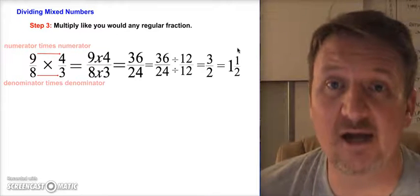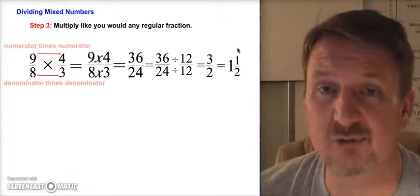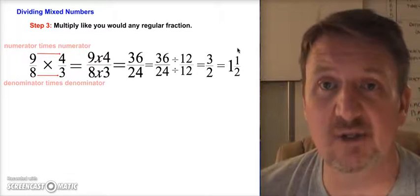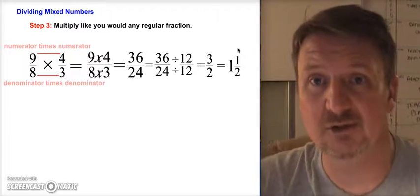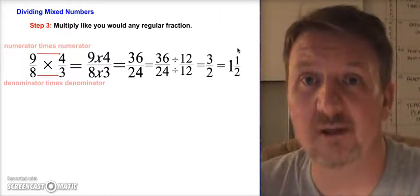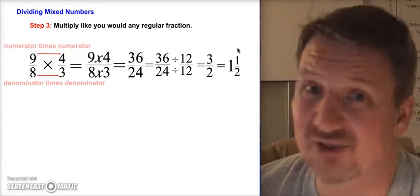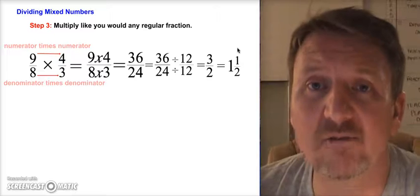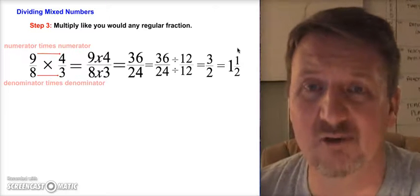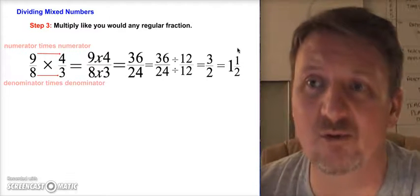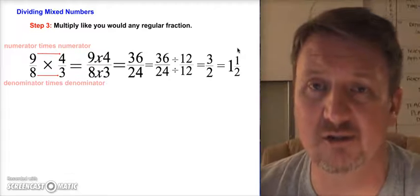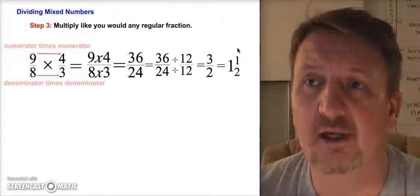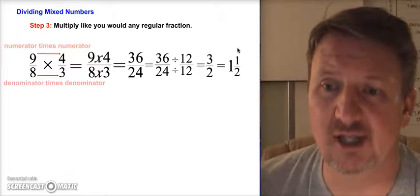If you have problems with two mixed numbers, just do an extra step and turn that second mixed number into an improper fraction as well. But you only flip one fraction — the second fraction. The first fraction always stays the same. Make sure you answer the questions and I'll see you in class.